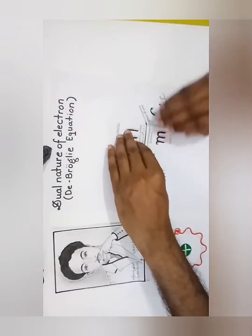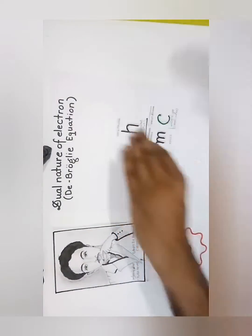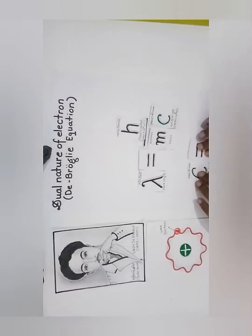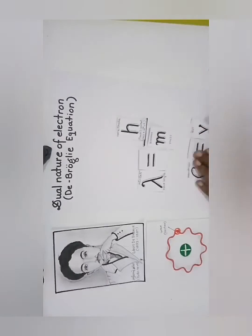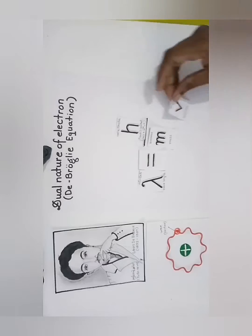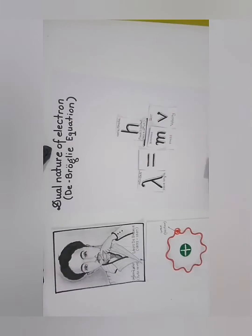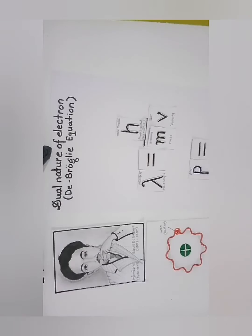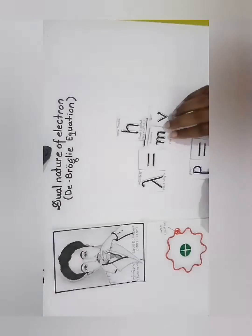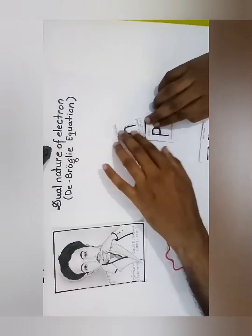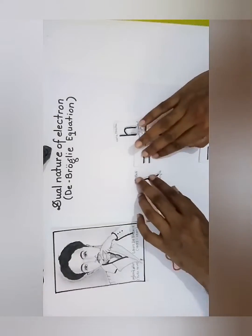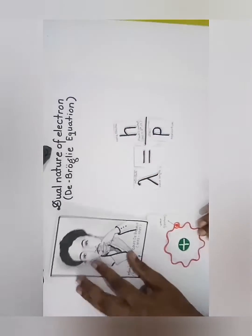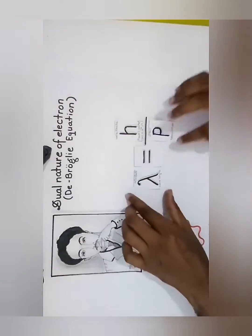If c = V, then P = MV (Equation 4). Substituting P = MV into Equation 3, we get h/λ = P, or λ = h/P. This is called the de Broglie equation.